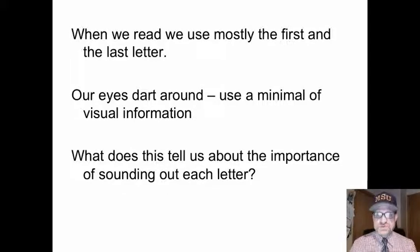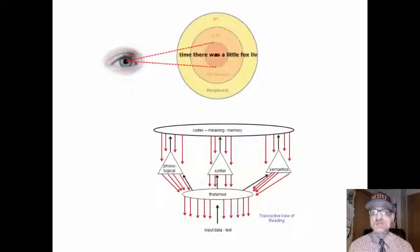When we read, we use mostly the first and the last letter. Our eyes dart around using a minimum of visual information. And what does that tell us again about the importance of sounding out each and every individual letter? That would actually slow us down. Again, here is the foveal, parafoveal, and peripheral. We're only able to see a little bit.